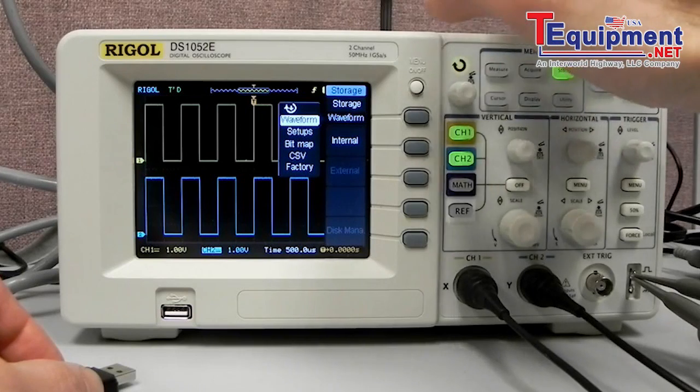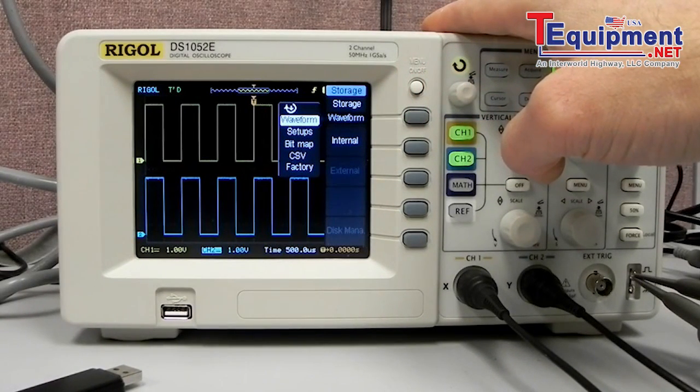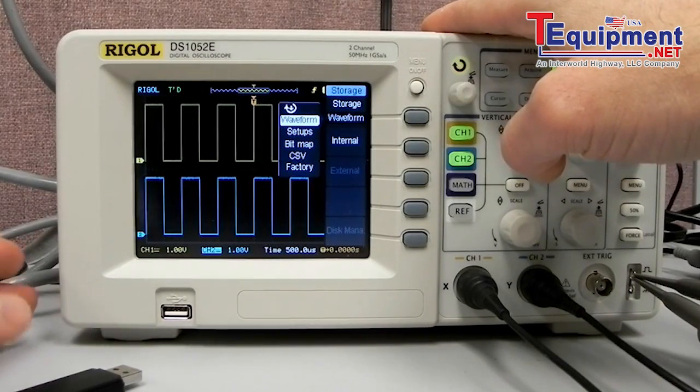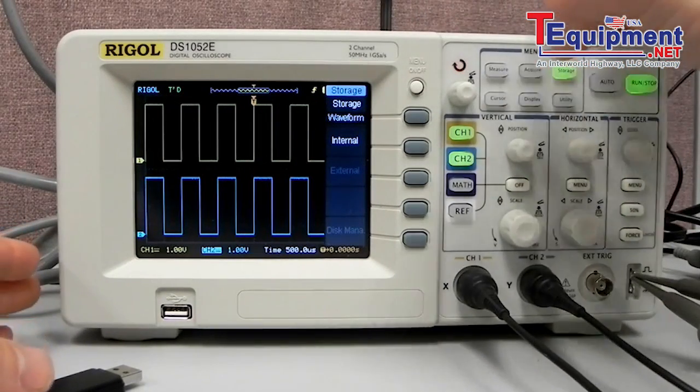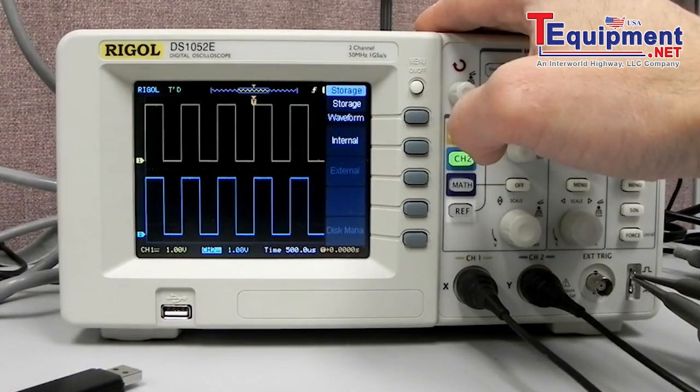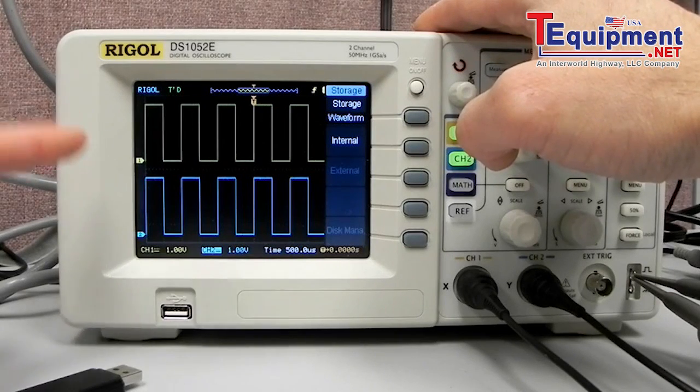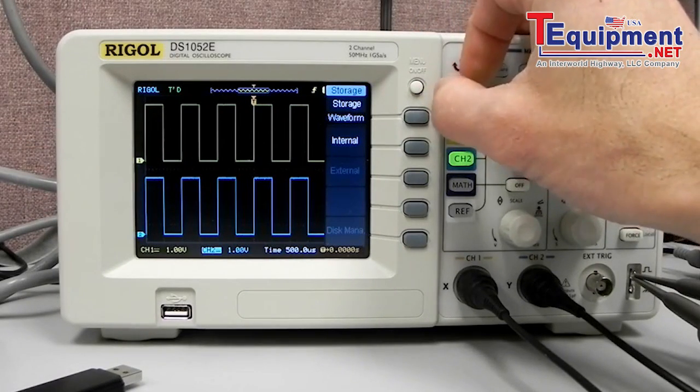Waveforms are used by the DS series of oscilloscope as well as the DG series of arbitrary waveform generators. If we wanted to take this waveform image and move it to another scope or move it to an arbitrary waveform generator and then generate that particular waveform we would save it in that particular file format.